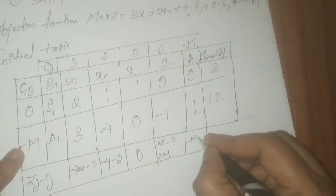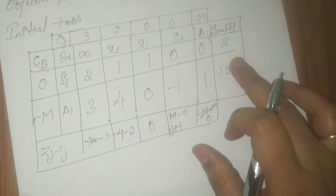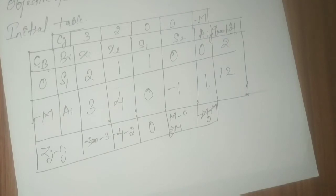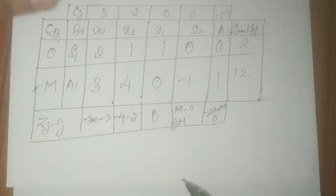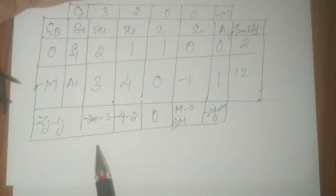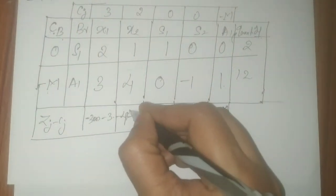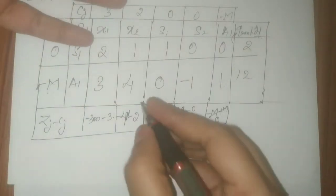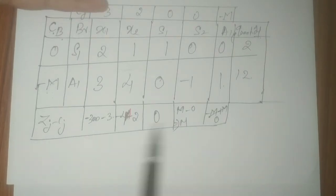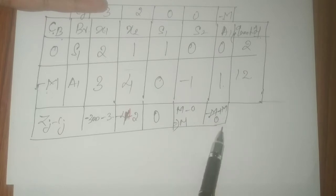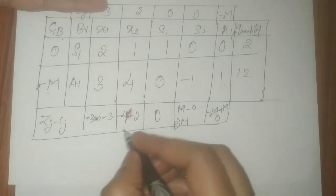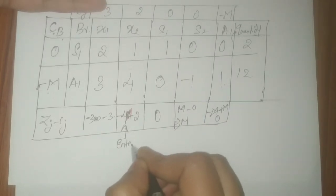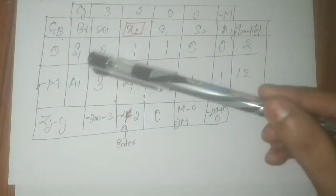Now identify the entering variable. Look at Zj minus Cj and find the most negative value — numerically the largest negative. The x2 column has minus 4M minus 2 (coefficient of M is 4) and x1 has minus 3M minus 3 (coefficient of M is 3). Since 4 is numerically larger, x2 is going to enter the basic variable table — this gives us the entering variable.